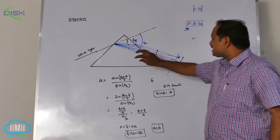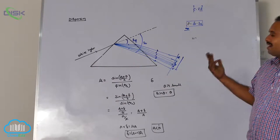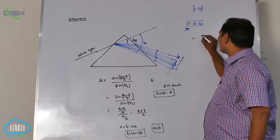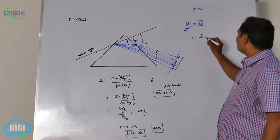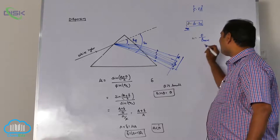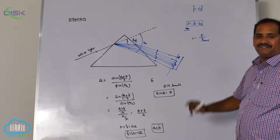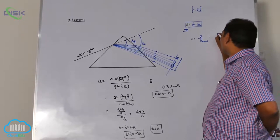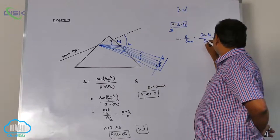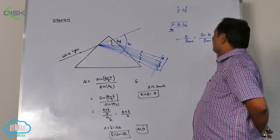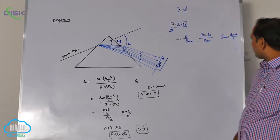Dispersive power is defined as the ability of the device to split white light into seven colors. Dispersive power omega (ω) is defined as the ratio of angular dispersion to mean deviation. Angular dispersion is δV − δR, and mean deviation is (δV + δR)/2.